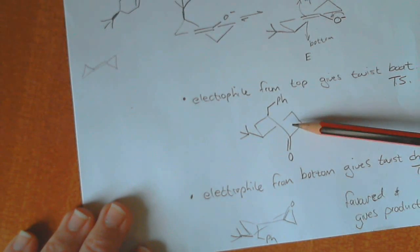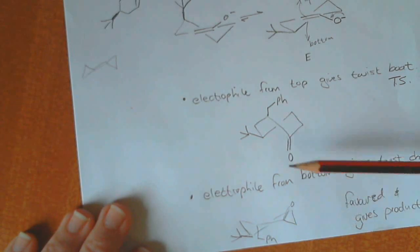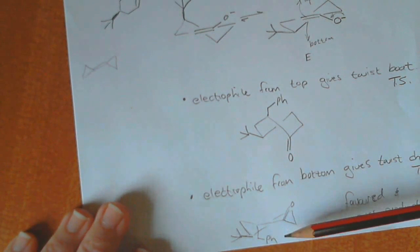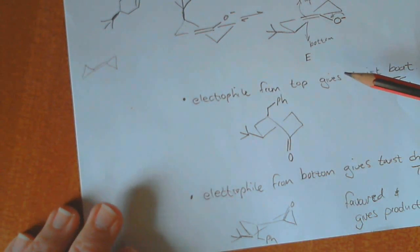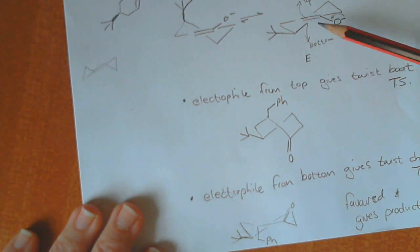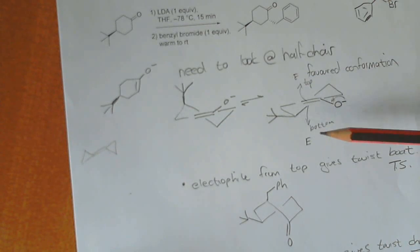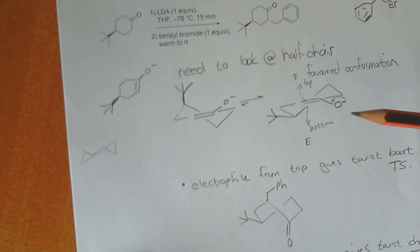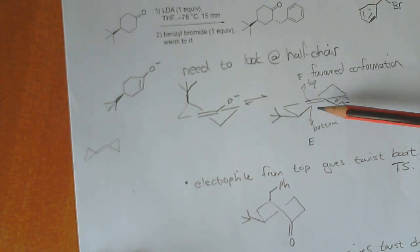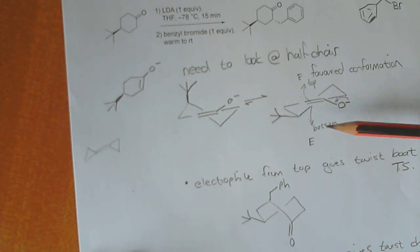So if you don't want to learn how to draw these things out, it's not going to make a big deal in terms of maybe losing a mark. So long as you can at least identify that whether it comes in from the top or the bottom, whether you're going to get a twist boat or twist chair.